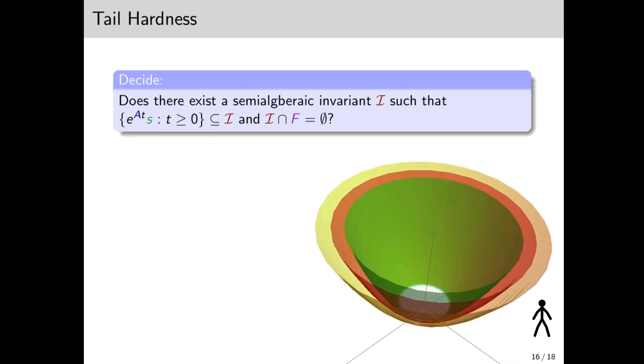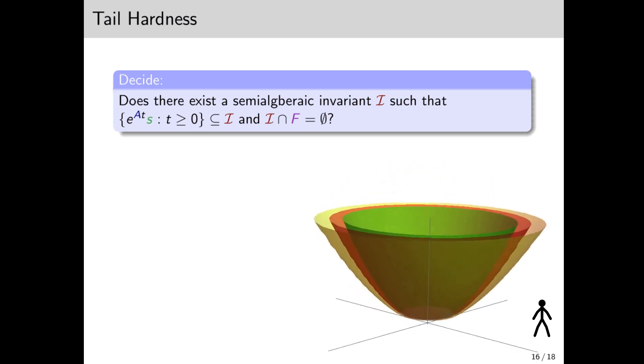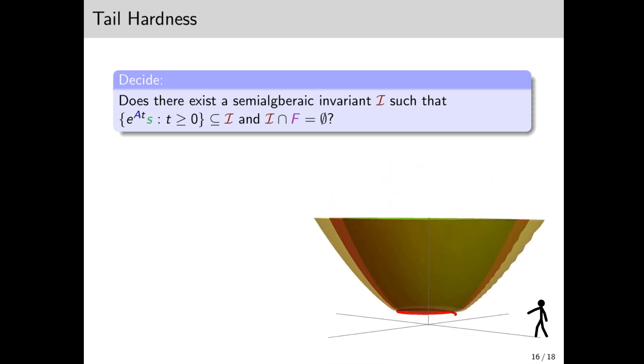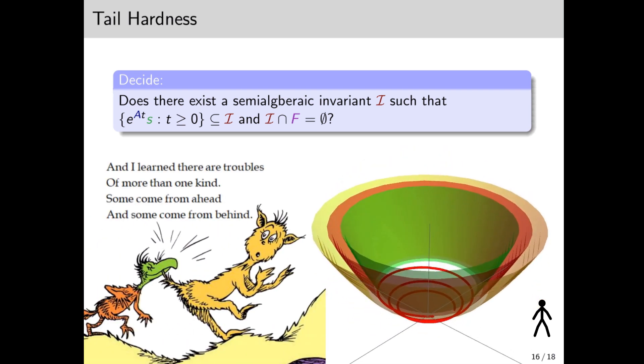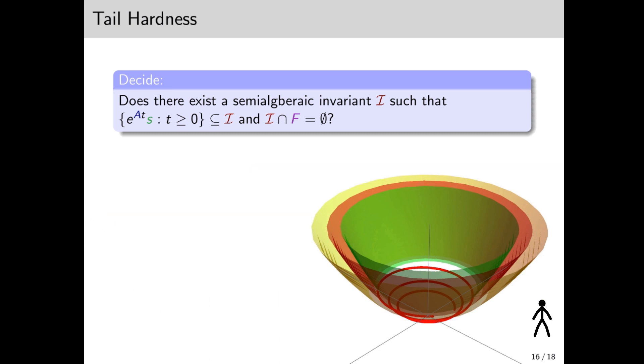But that still doesn't give us an invariant for the entire orbit, since we have the tail. And as Dr. Seuss says, 'And I learned there are troubles of more than one kind. Some come from ahead, and some come from behind.'